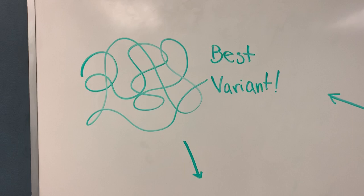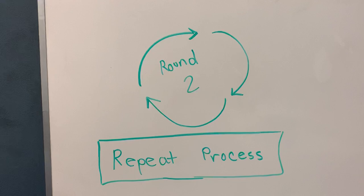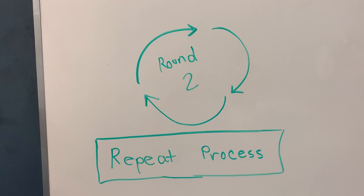You repeat the process again. You can do it one more time or as many times as you want in order to get the best variant that has the most optimized activity, stability, or selectivity.